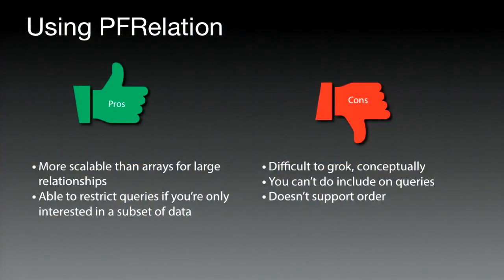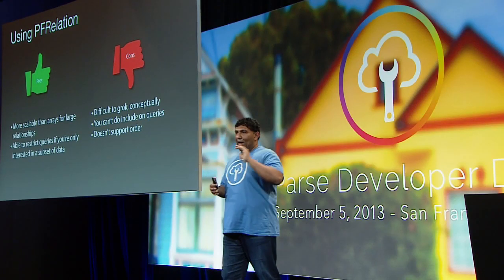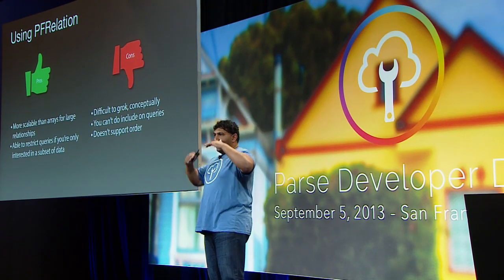Pros and cons of using Parse relations: Parse relations are more scalable than arrays for large relationships, in the same way that pointers are more scalable than arrays for one-to-many. You can also restrict queries on either side with any constraints you want. The downside is that Parse relations are a little difficult to grok conceptually — it took me a couple of days to get over that initial hump. But once you do, it's like this magical thing that opens up. Unfortunately, you can't do include on queries, and they don't support order — if you need order, use arrays.